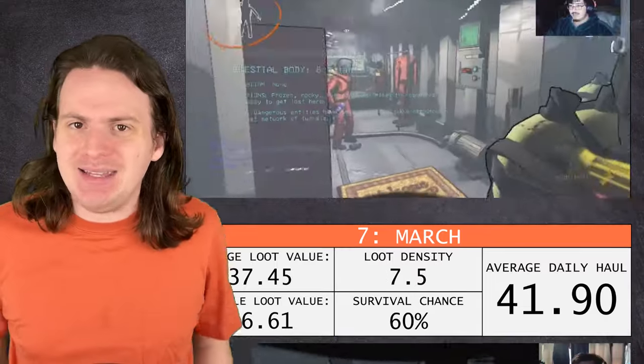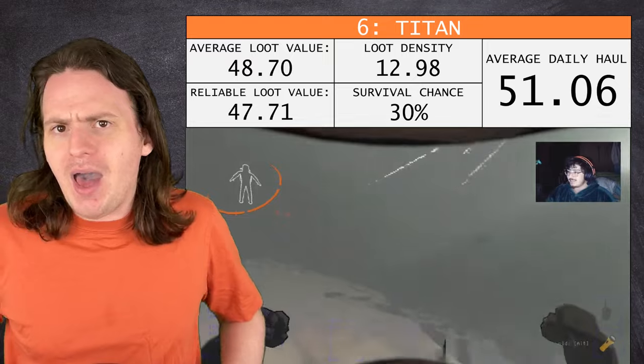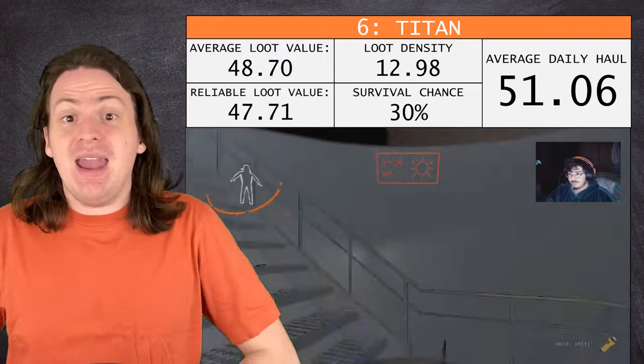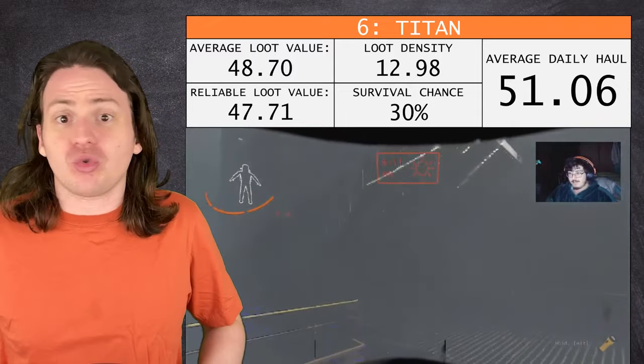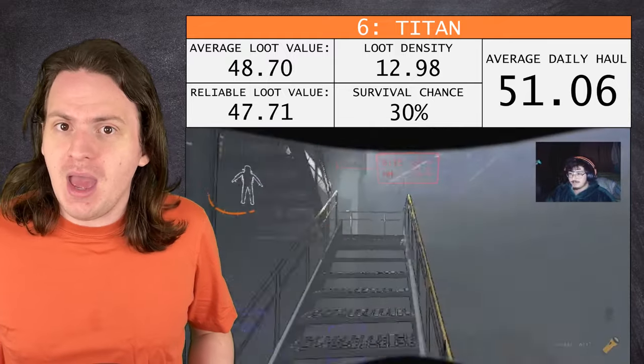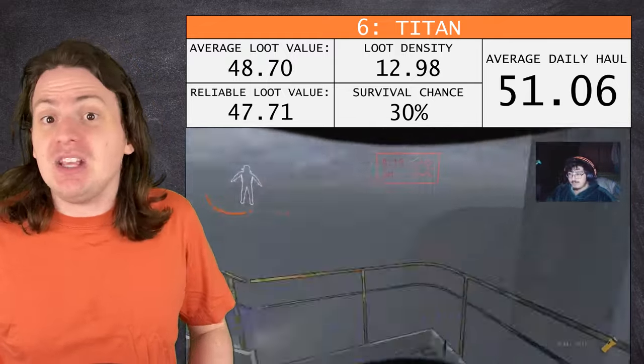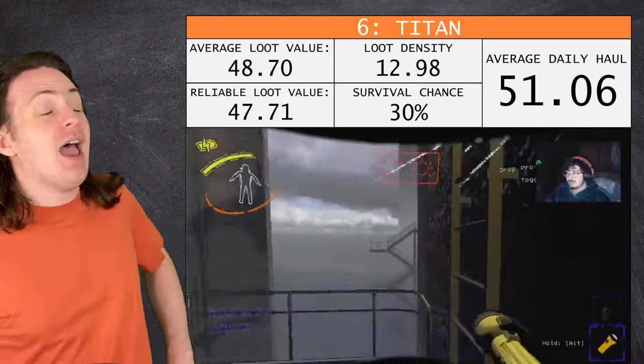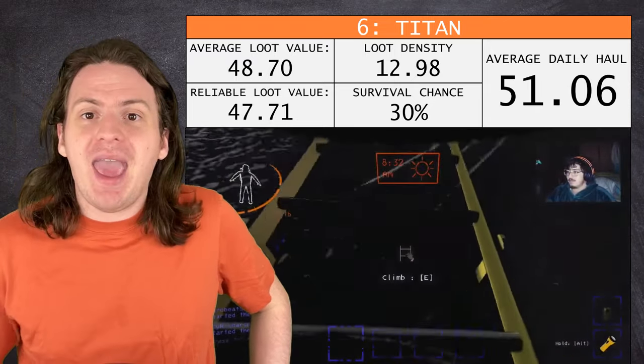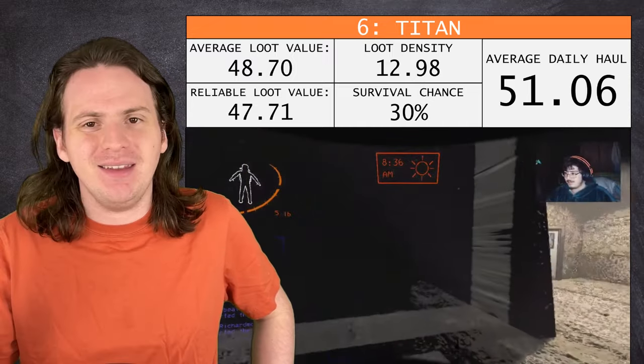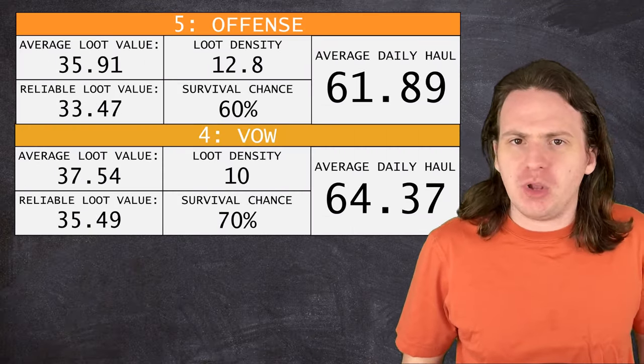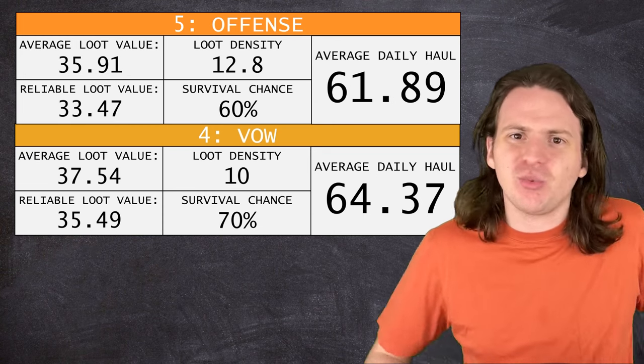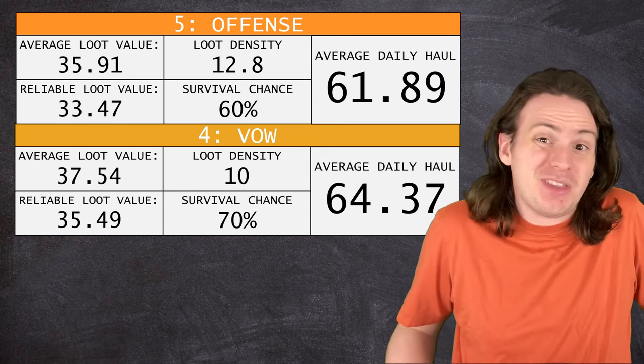Right above that is Titan. It's the most dangerous moon by a lot, so obviously your chances of dying are significantly higher. But even if you're great at the game and never die, the loot there is just straight up worse than the other hard moon brothers. Admittedly, the walk from the door to the ship is pretty easy. Unless of course a dog decides to see what these cool stairs are, and then you're pretty much screwed. So if you're going to shell out the cash to go to one of the further moons, skip Titan. Offense and Vow are both pretty similar right in the middle. Vow is a bit easier in terms of enemies, but Offense has a bit more loot to find, so it's really up to you which one you'd rather go to.